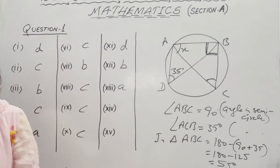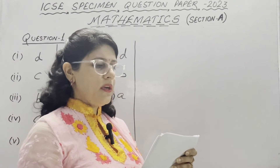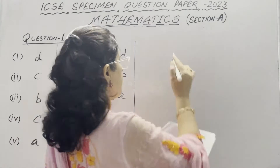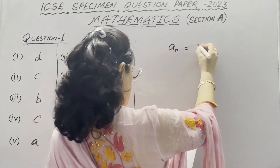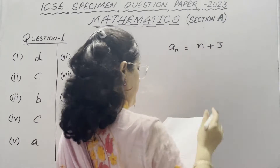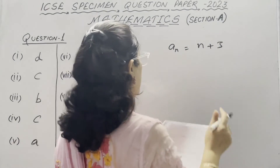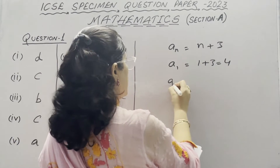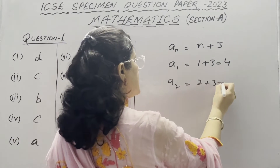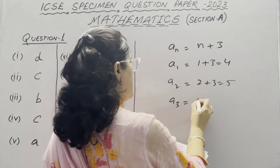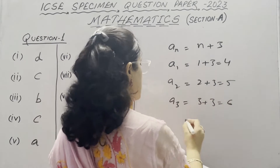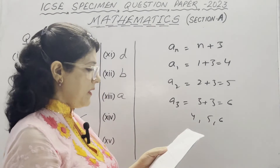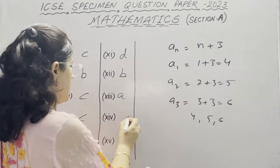In Part 14, the nth term of an AP is given as A(n) equals n plus 3. The first three terms are: A1 equals 1 plus 3 equals 4, A2 equals 2 plus 3 equals 5, and A3 equals 3 plus 3 equals 6. So 4, 5 and 6 are the first three terms of this AP. The correct option is C.